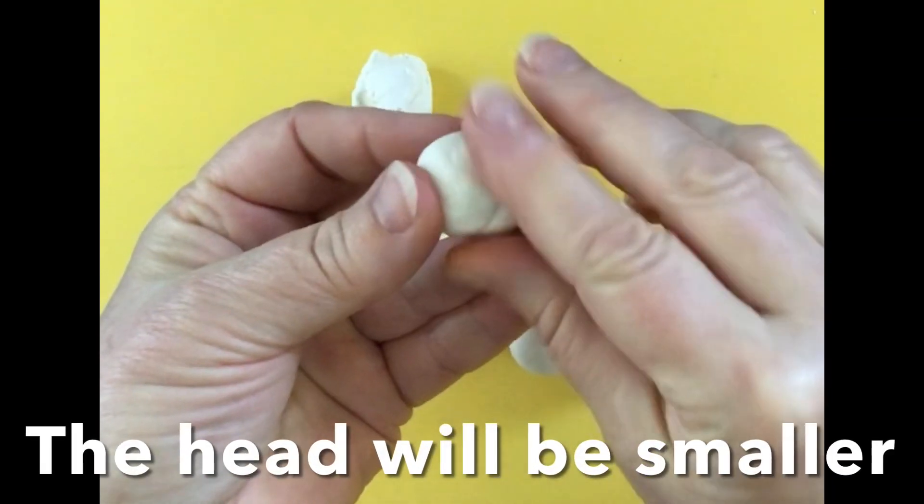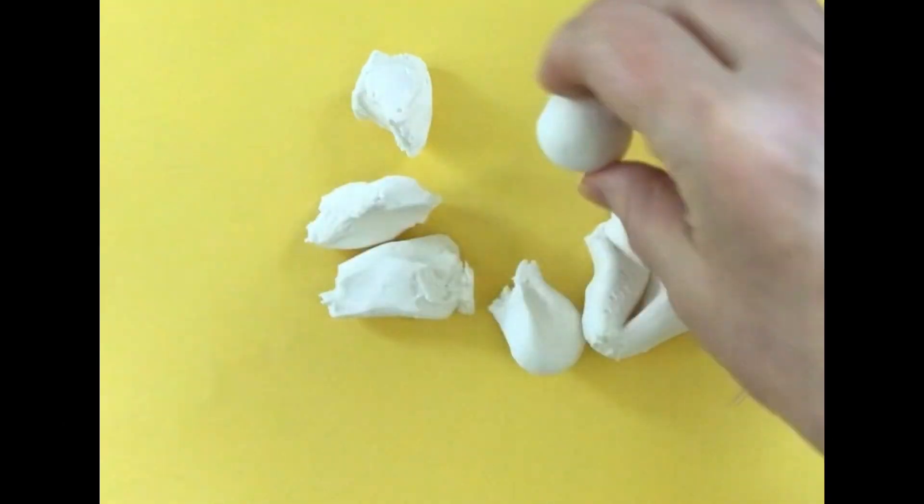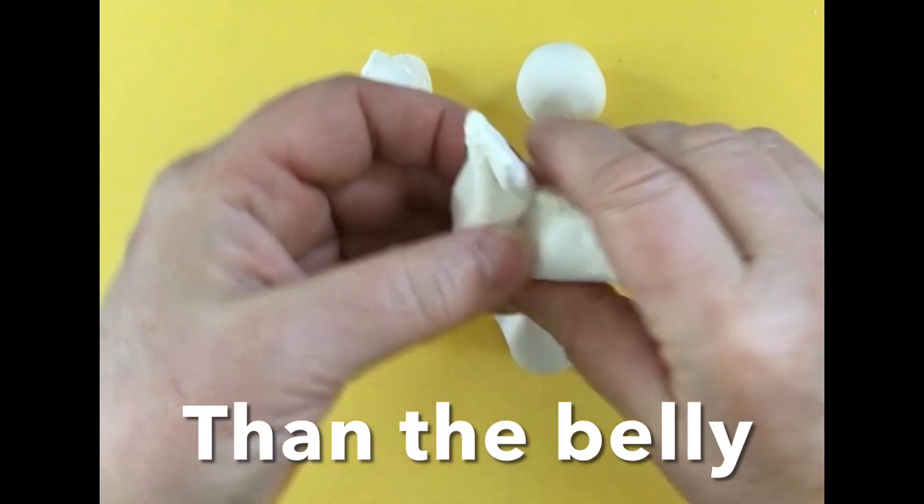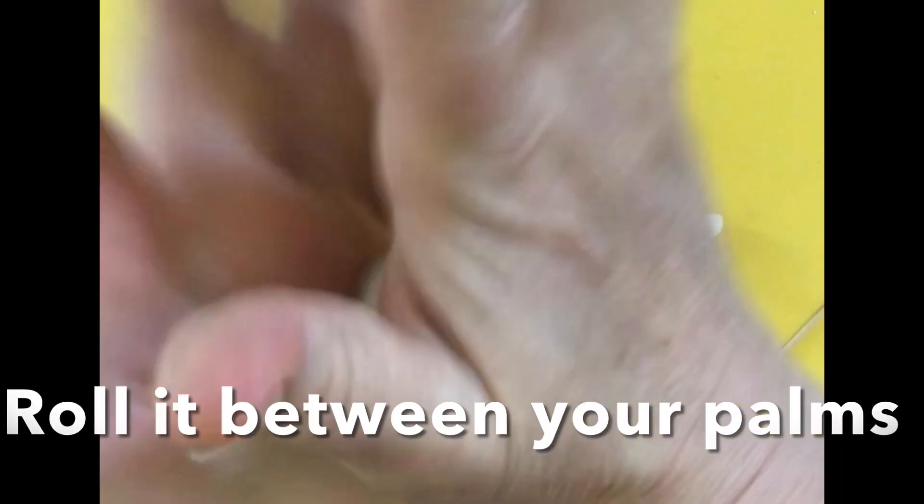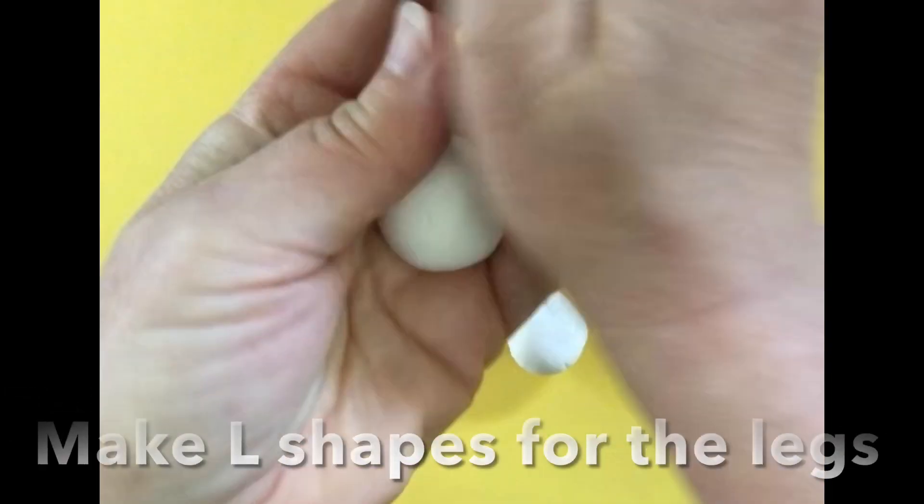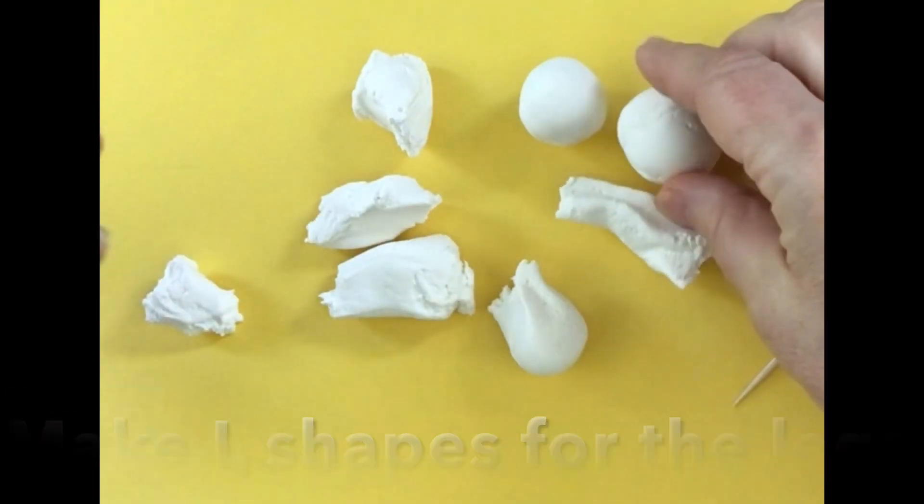I'm rolling it between my palms to make a ball and then I'm patting it together. This will be the head. And then I'm going to roll this out for the body. I'm using my palms just to roll it. Take your time. Pat it if you need to.